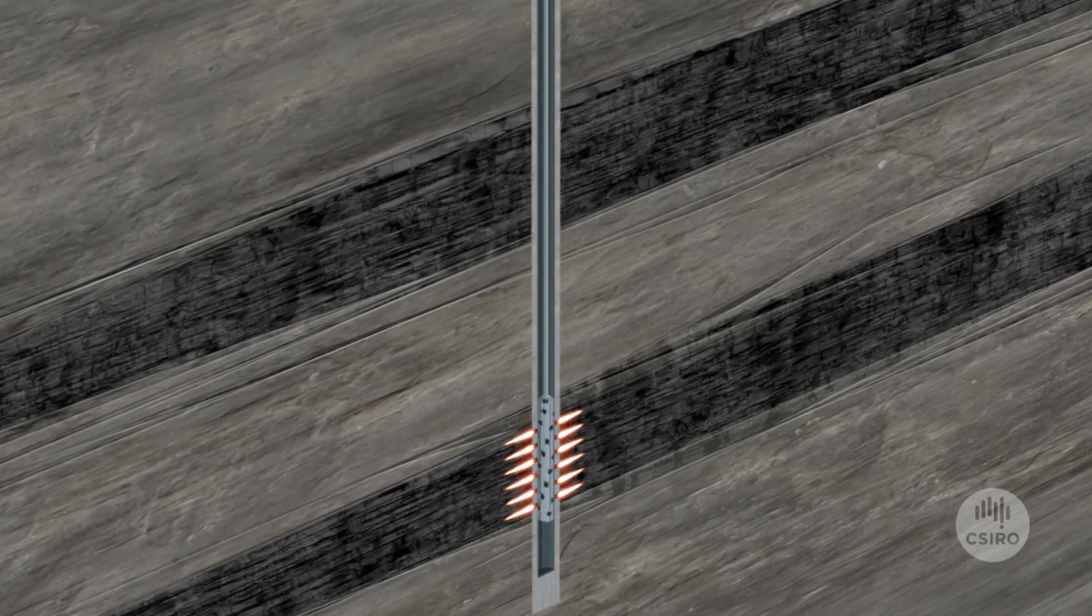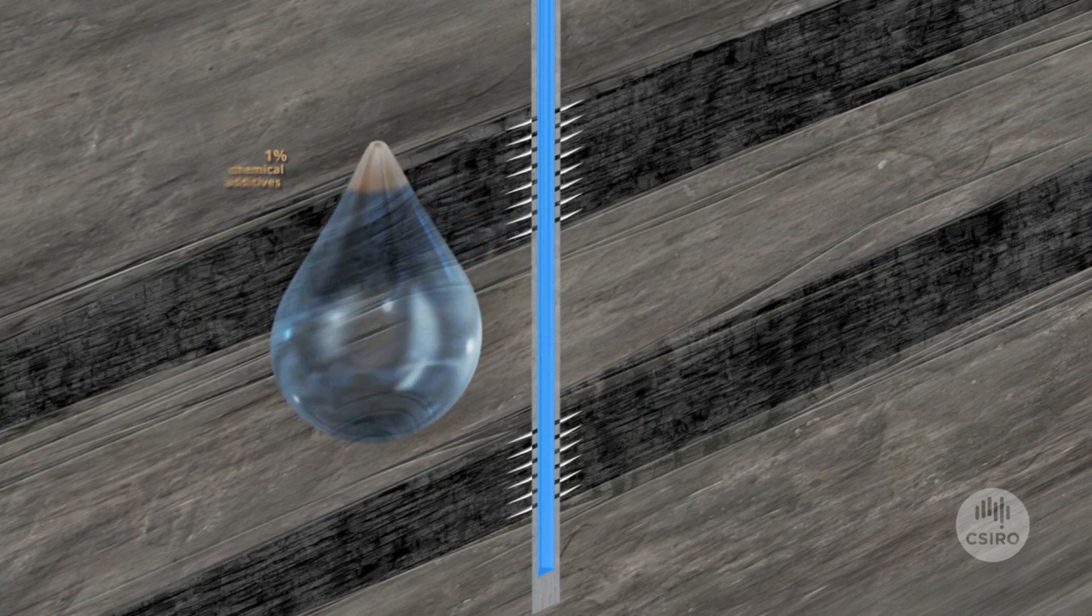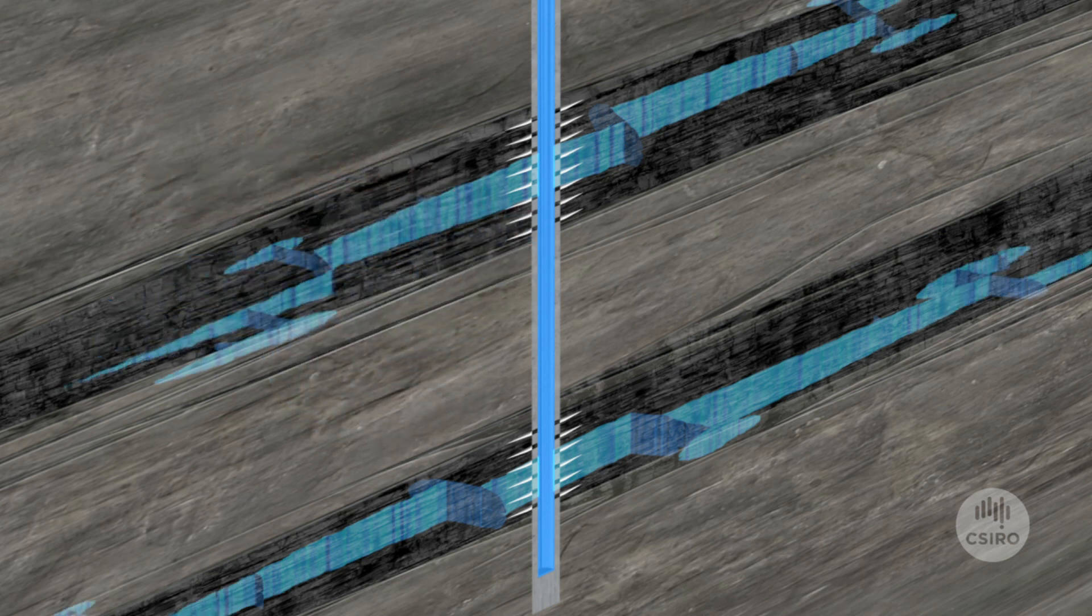Hydraulic fracturing involves perforating the casing at different levels along the well to gain access to the coal. Water containing chemical additives is pumped under high pressure down the well, opening up existing fractures and creating new ones.